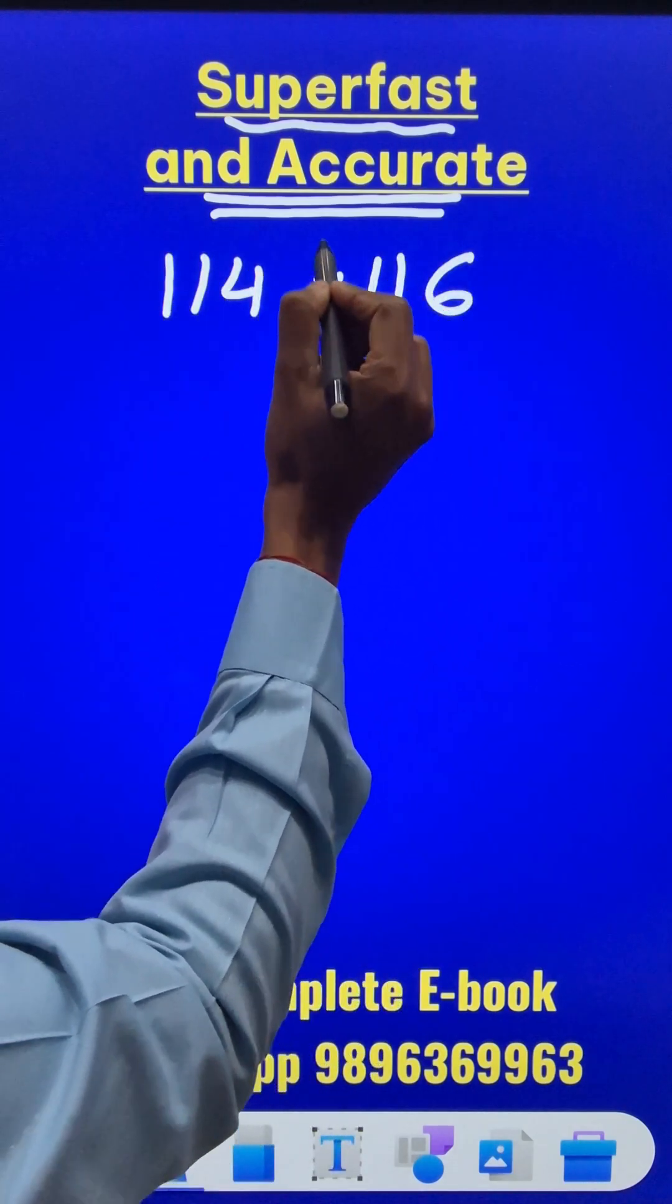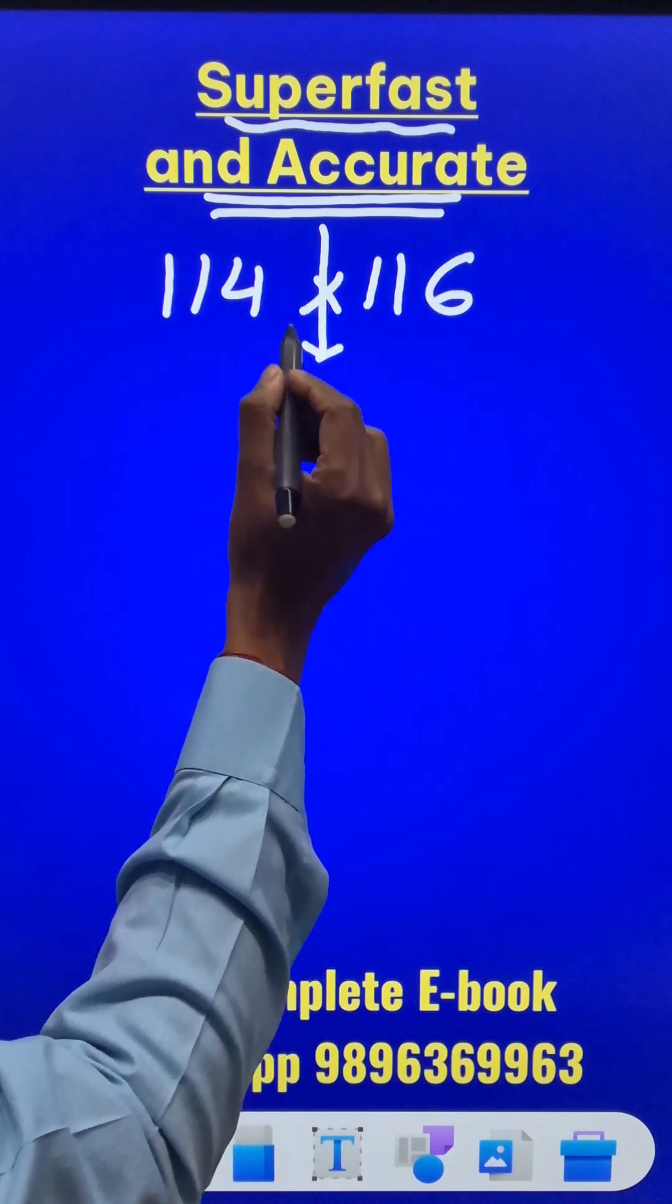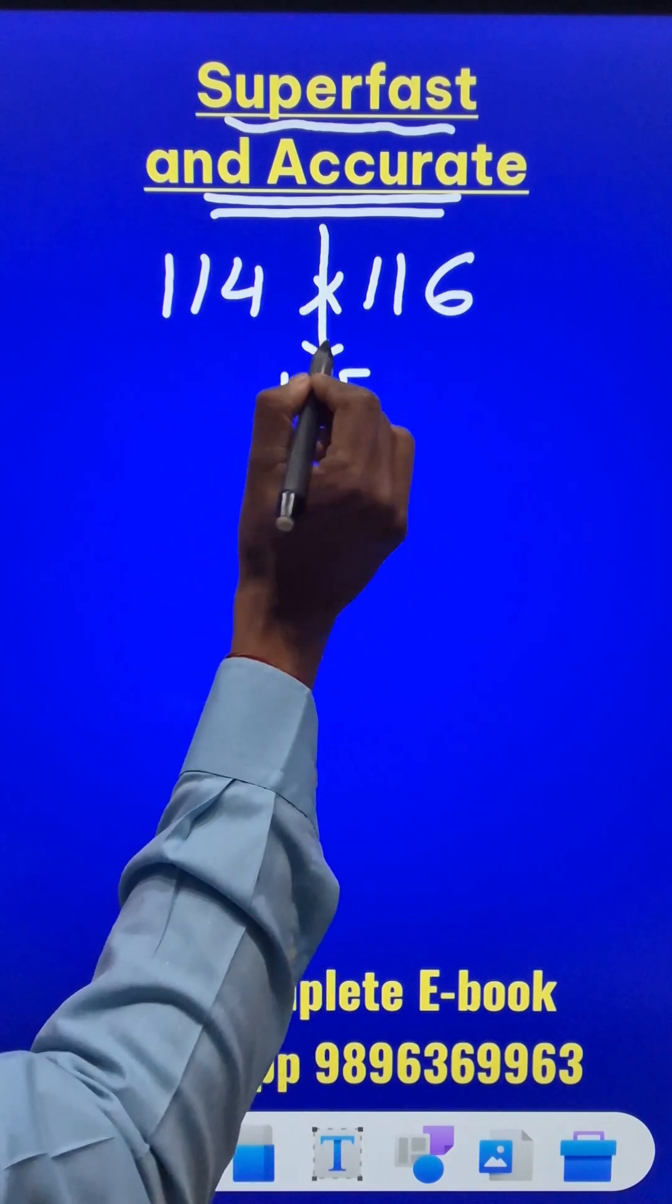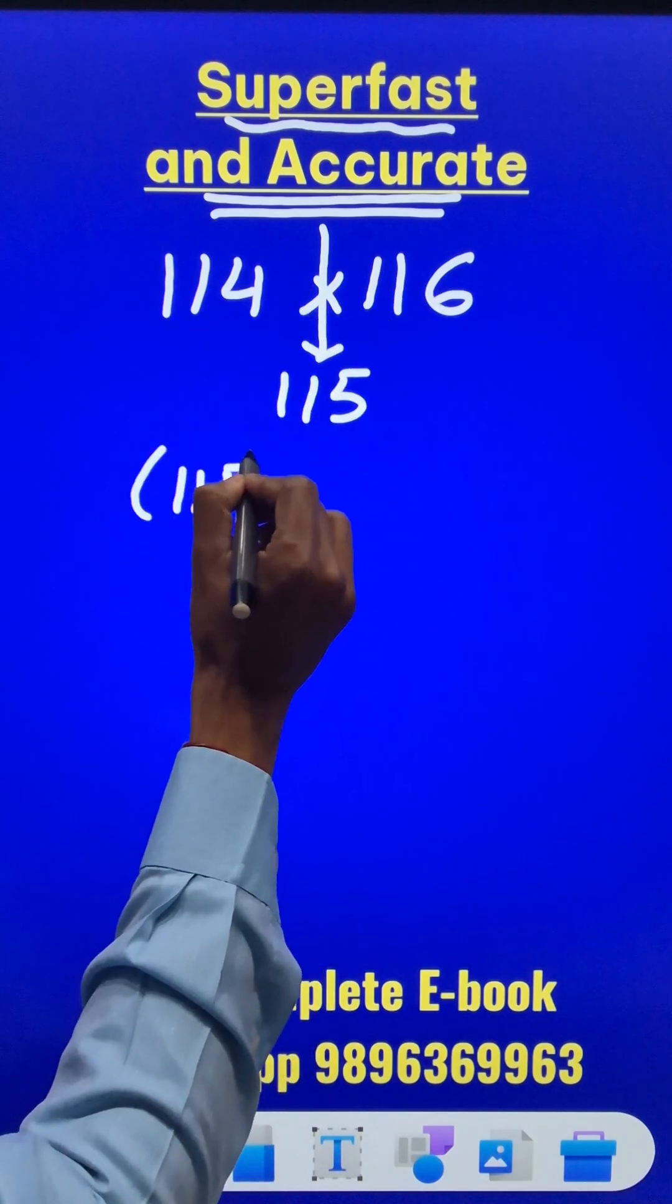The first thing you have to realize is the intermediate number, the number in the middle, is 115. So what do you do? Just square 115 first.